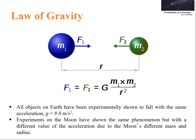Now coming to law of gravity. All objects on earth have been experimentally shown to fall with the same acceleration, g equals 9.8 meters per second squared. Experiments on moon have shown the same phenomena but with a different value of acceleration due to moon's different mass and radius.